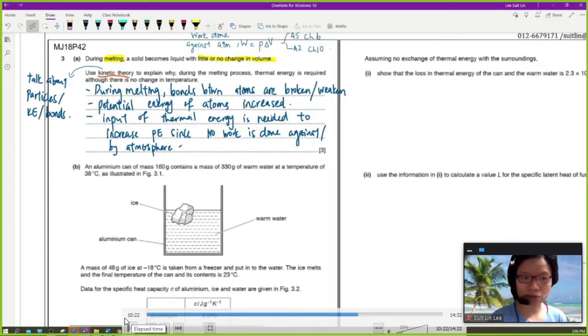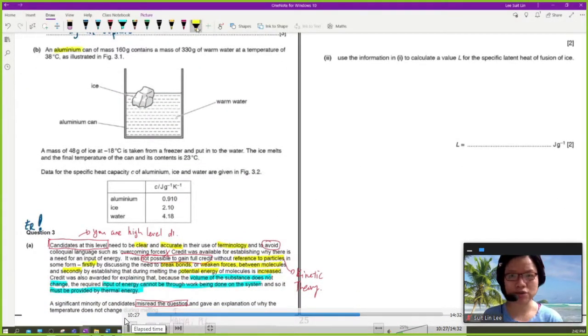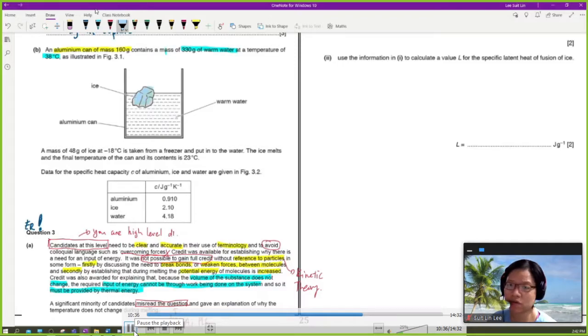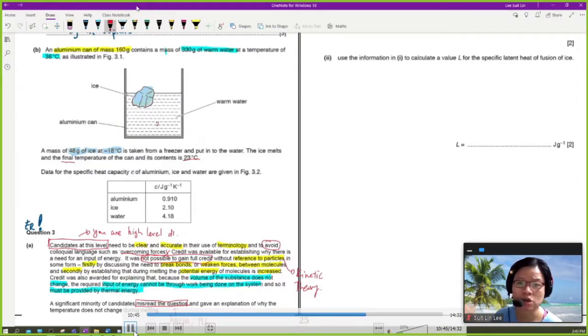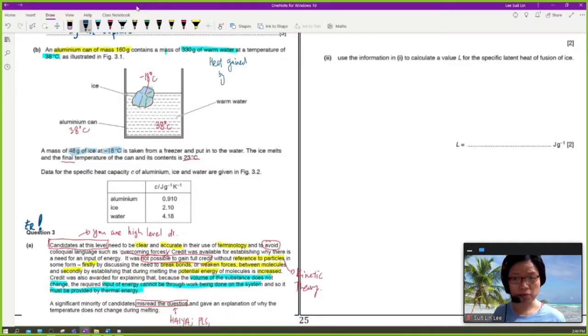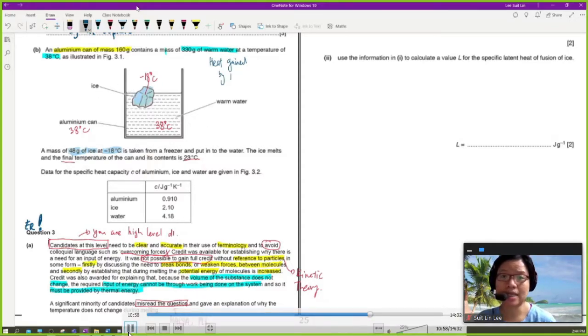Let's look at the last part of the question. Assuming no exchange of thermal energy to the surrounding. Very nice. So you have an aluminium can, 160 gram, and 330 gram of warm water at temperature 38 degrees Celsius. A mass of 448 grams of ice at negative 18 degrees Celsius is taken from the freezer and put into the water. So the ice melts and everybody has a final equilibrium temperature of 23 degrees Celsius. So the water is 38 degrees Celsius. The ice is negative 18 degrees Celsius. The aluminium can, which is also in contact with the water, will have the same temperature as the water, 38 degrees Celsius. So from here, definitely there's net heat flow. The heat will flow from the hotter water and aluminium into the colder ice. So you can say that the heat gained by ice will be equal to heat loss by water and aluminium.